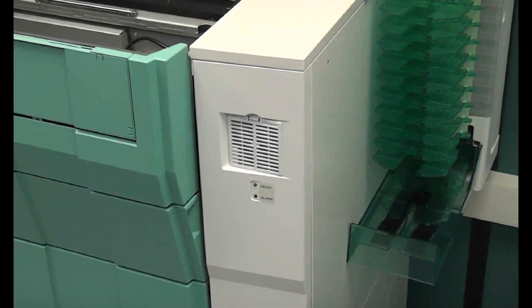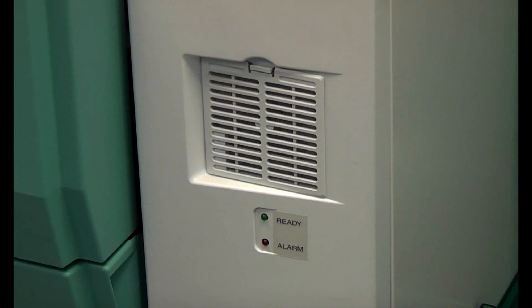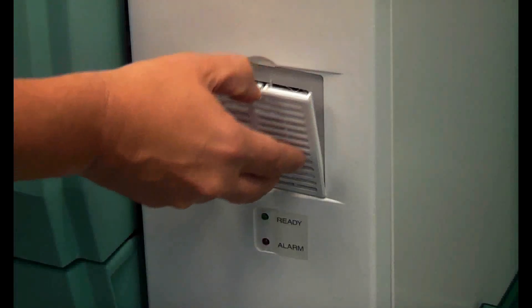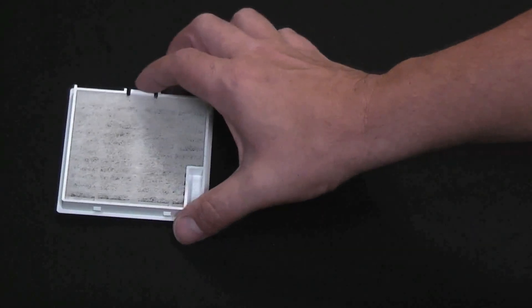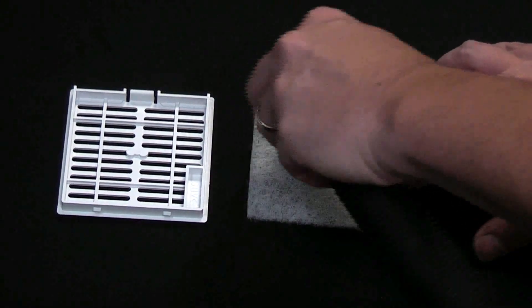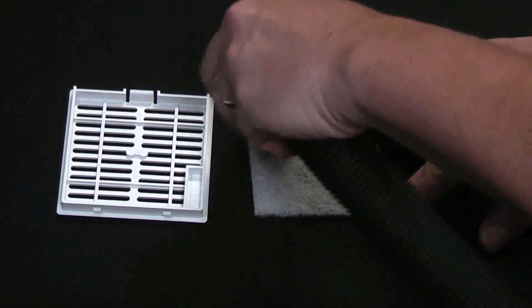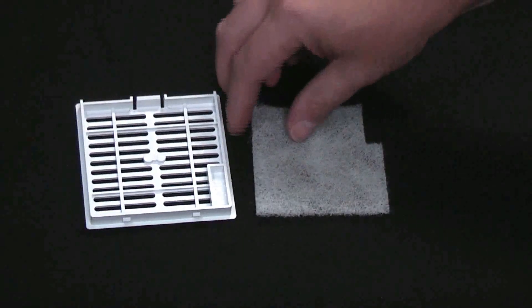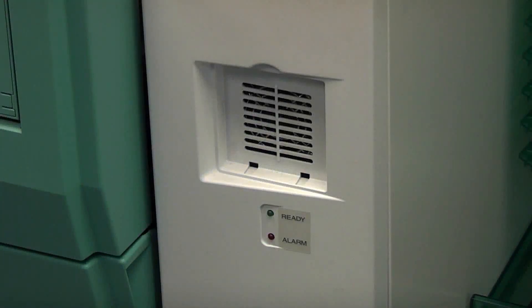Clean the air filter. Remove the air filter cover on the front of the printer. Either vacuum or wash the air filter and the filter cover. If the air filter is washed, it should not be rubbed during washing and must be completely dry before it is reattached.